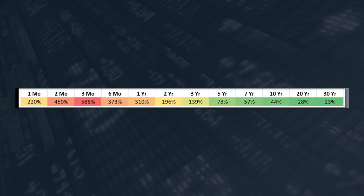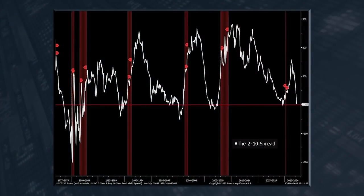Yields have risen right across the whole curve, but short-term yields are rising much faster than longer-term yields. The two-year, for example, is up by nearly 200% since the beginning of the year — basically almost a doubling of the interest rate — whereas the 10-year is up by only 44%. This is what's called the two-and-ten-year spread. When the two-year is higher than the ten-year, it falls below that red line — that's what's called an inversion in the two-to-ten spread.